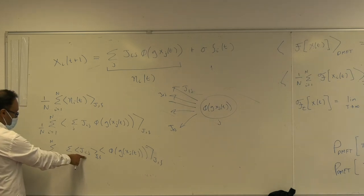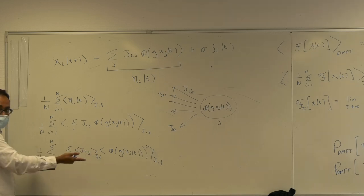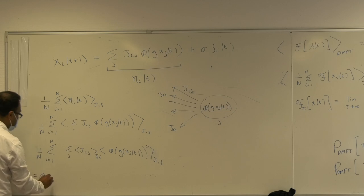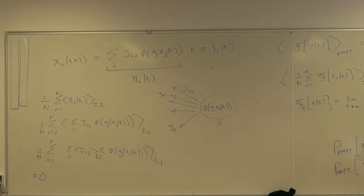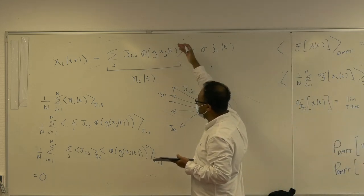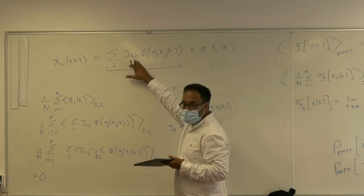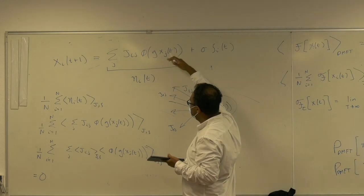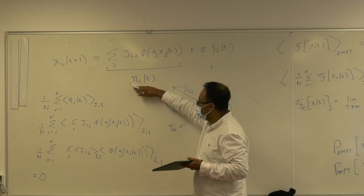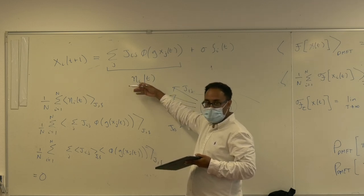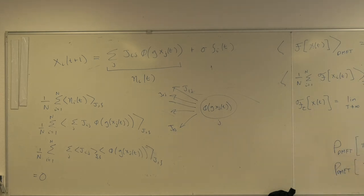Since the average of J_ij over the connectivity is zero, the whole first moment becomes zero. So the Gaussian process for the dynamic mean field variable should have zero mean. This makes intuitive sense: phi is an odd function, J has zero mean, nothing breaks the symmetry between positive and negative, so on average things are equally positive as negative — the average drive to each neuron, when averaged across neurons and connectivity, is zero.